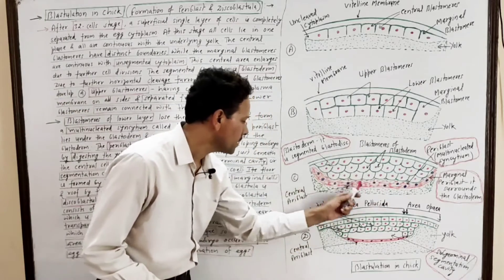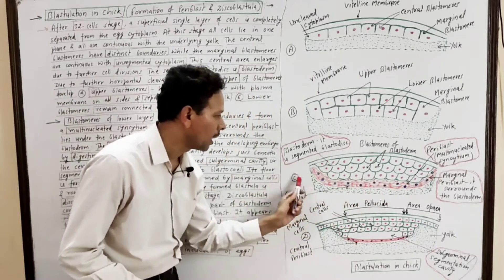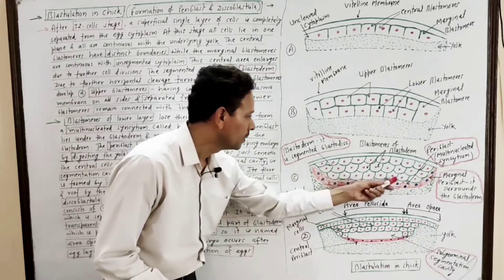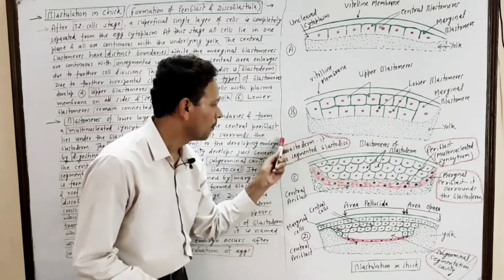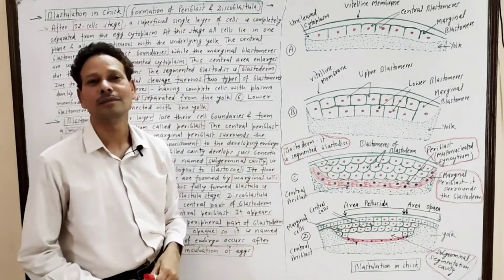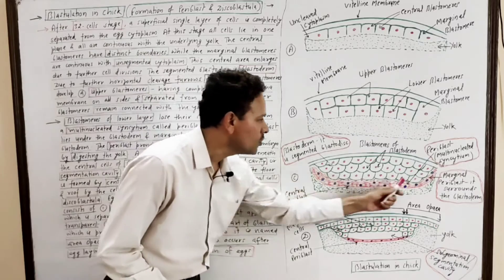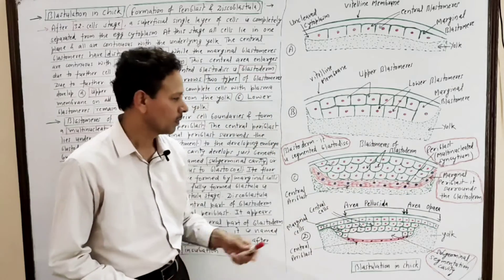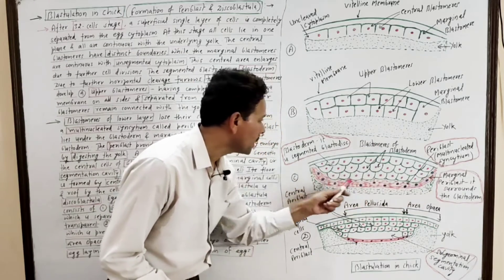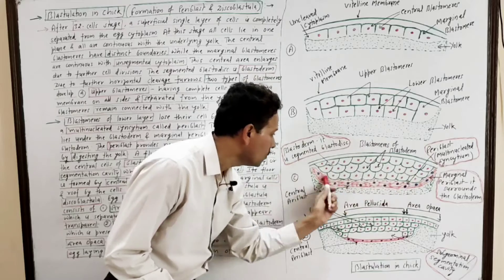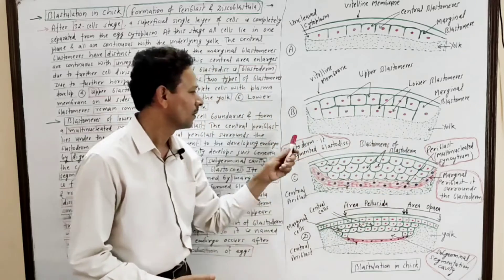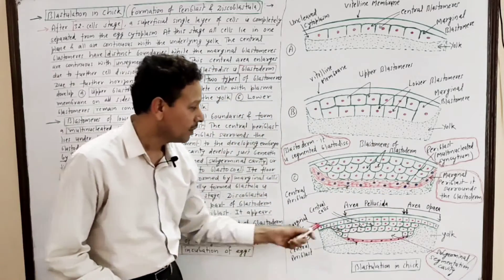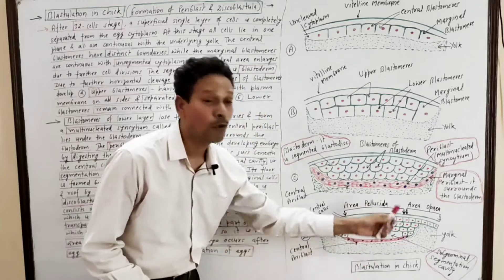The pariblast has two parts: the central pariblast, which lies beneath the blastoderm, and the marginal pariblast, which surrounds the blastoderm.